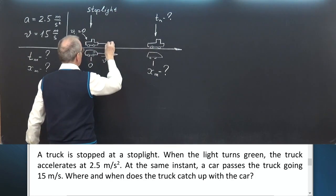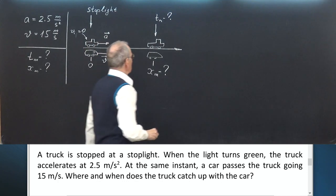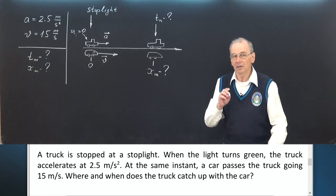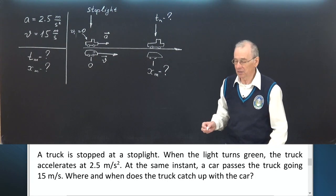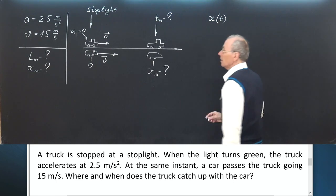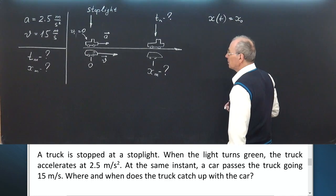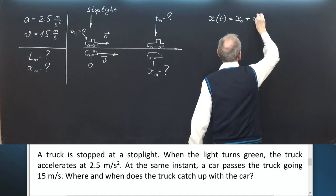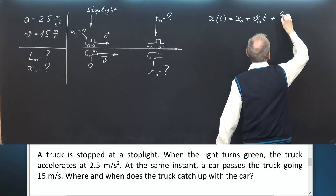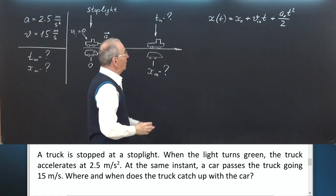The truck accelerates at 2.5 meters per second squared. Let's use the formula, the universal formula which describes both uniform motion and uniformly accelerated motion in a straight line. x at any moment in time gives starting position of our body, starting coordinate x0, plus Vx initial times t, plus a times t squared over 2. Now let's use this formula.